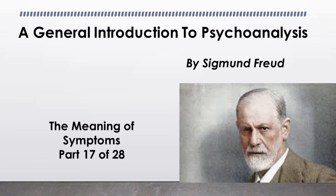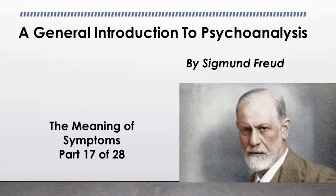In addition to the compulsion of positive and negative content, an intellectual doubt makes itself felt that gradually attacks the most ordinary and assured certainties. All these things merge into steadily increasing uncertainty, lack of energy, and curtailment of personal liberty — despite the fact that the patient suffering from compulsion neurosis is originally a most energetic character, often of extraordinary obstinacy, intellectually gifted above the average, and has for the most part attained a desirable stage of ethical development. He is over-conscientious and more than usually correct.